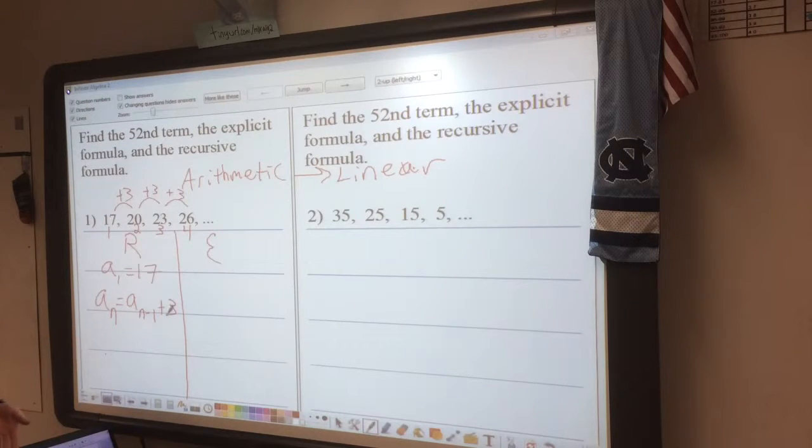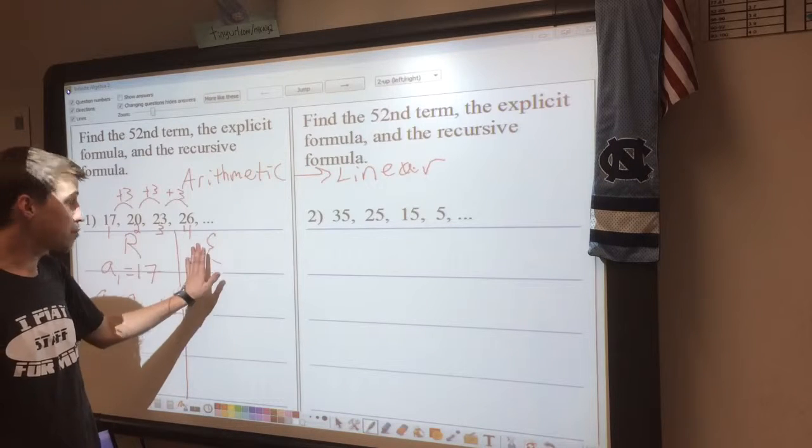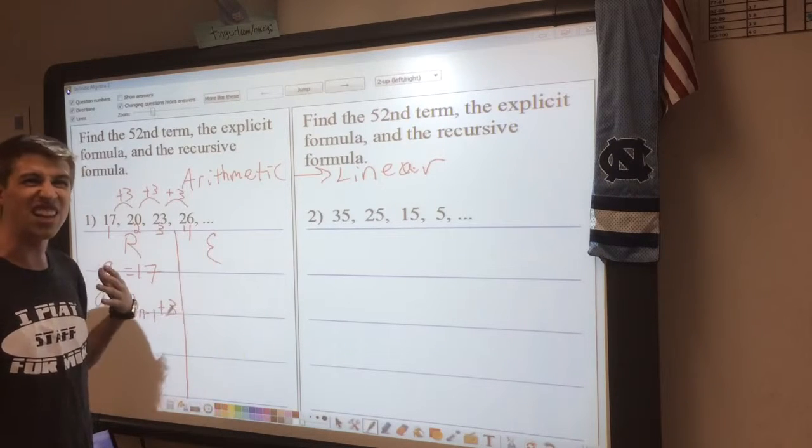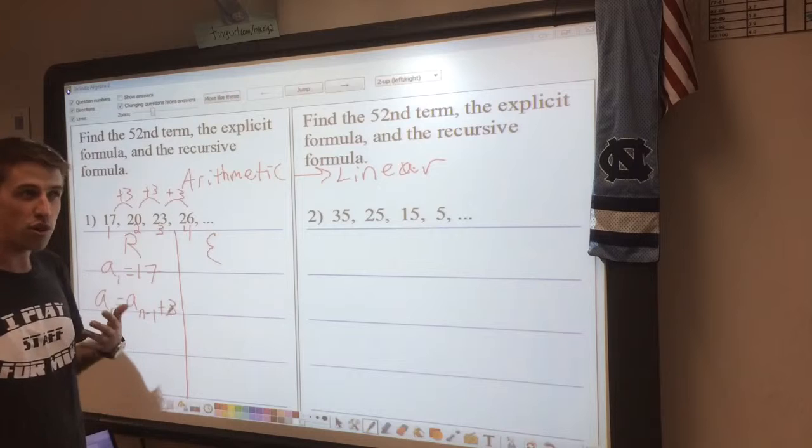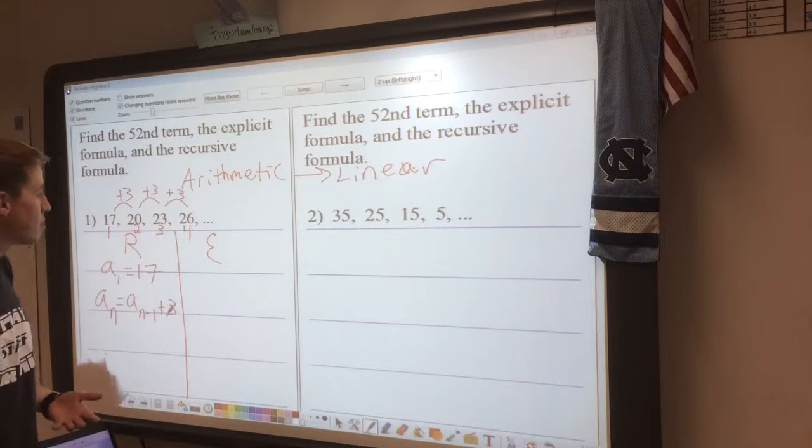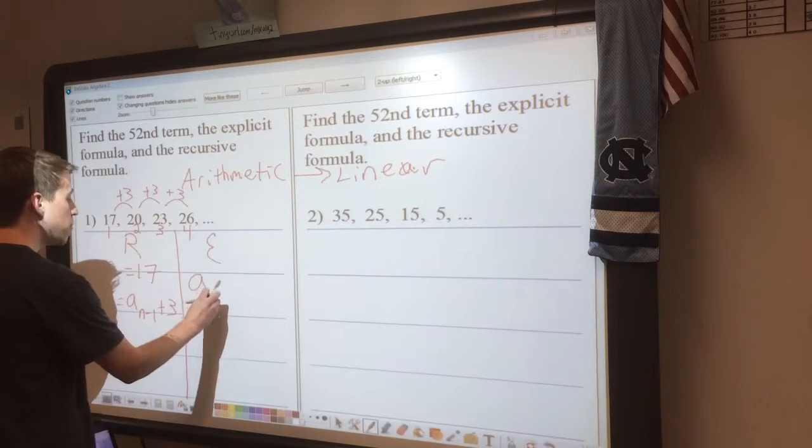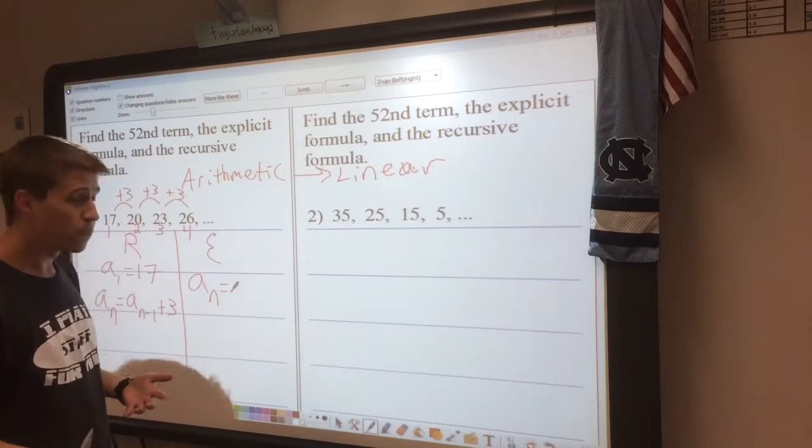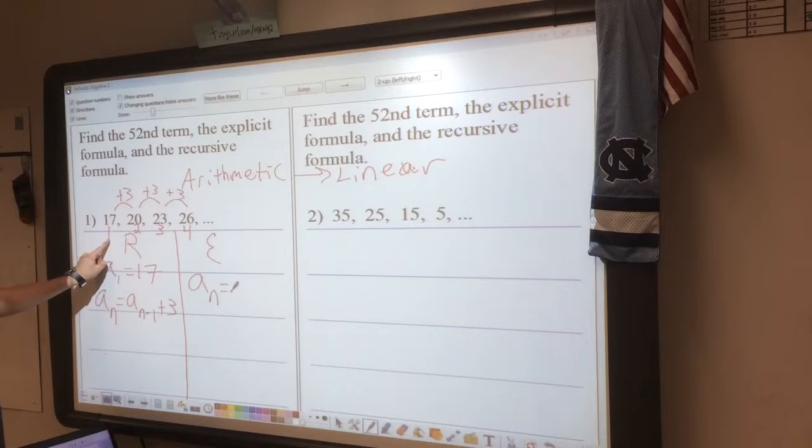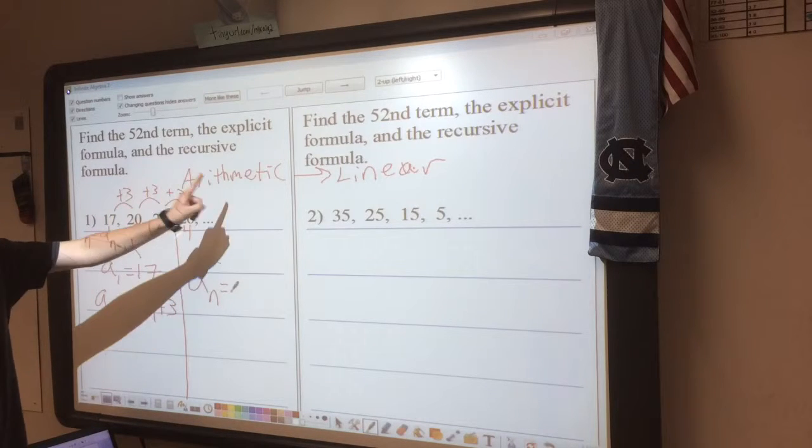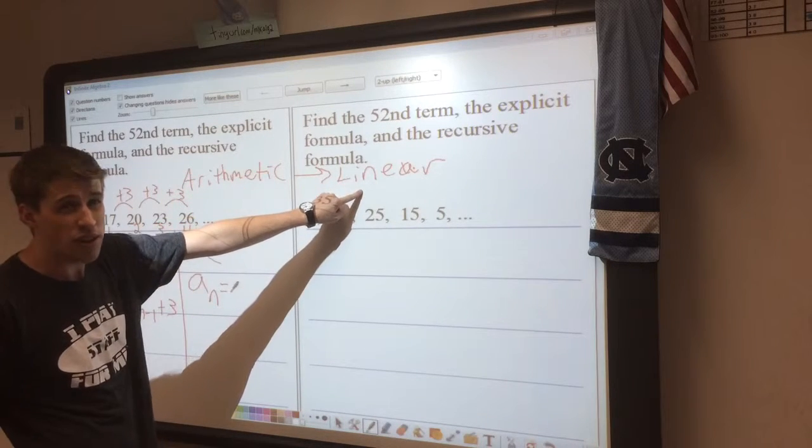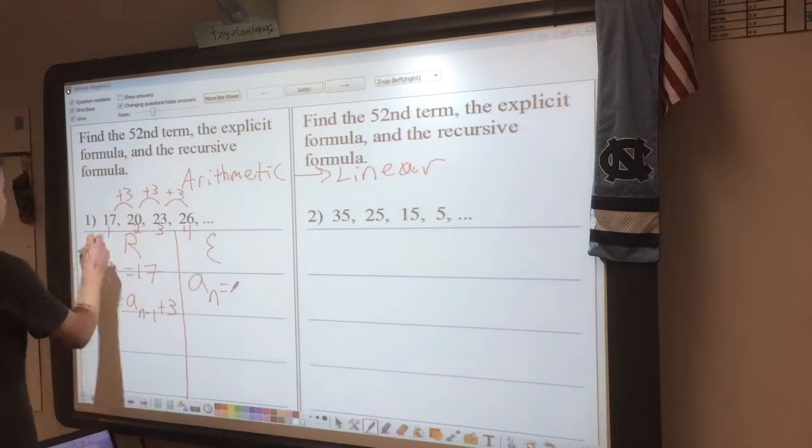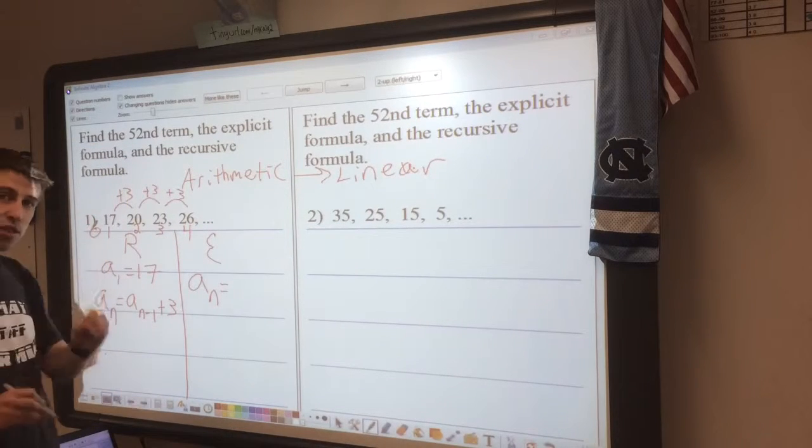Now the explicit formula is a little bit different. The explicit formula is going to look like a linear equation that we're used to writing in our algebra classes. So it's still going to be A sub n, but now we need a classic y-intercept and slope. Now right here, I see that this sequence starts at 1, but arithmetic and linear equations and formulas always start where the sequence is 0.